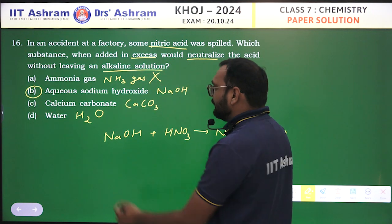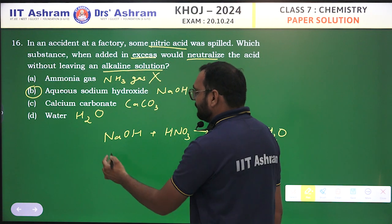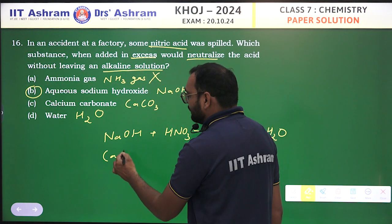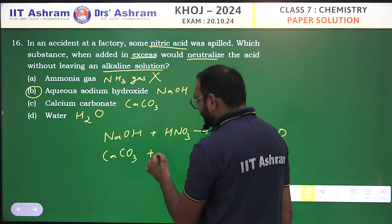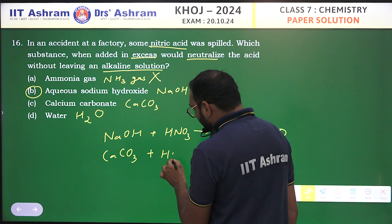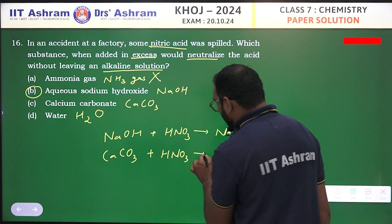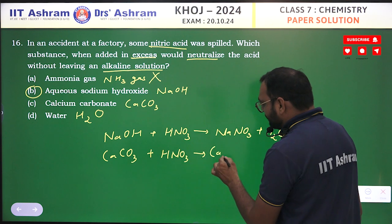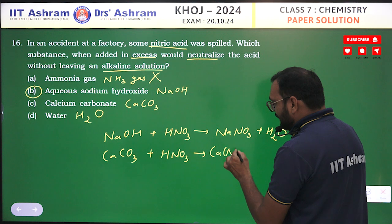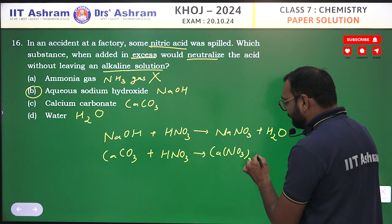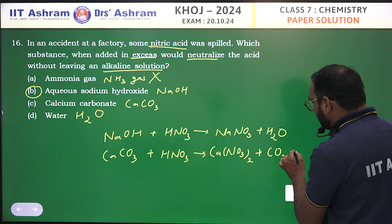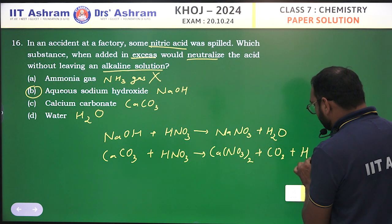The next option is CaCO₃, calcium carbonate, which will also react with nitric acid: CaCO₃ + HNO₃ gives Ca(NO₃)₂ plus CO₂ gas plus H₂O.